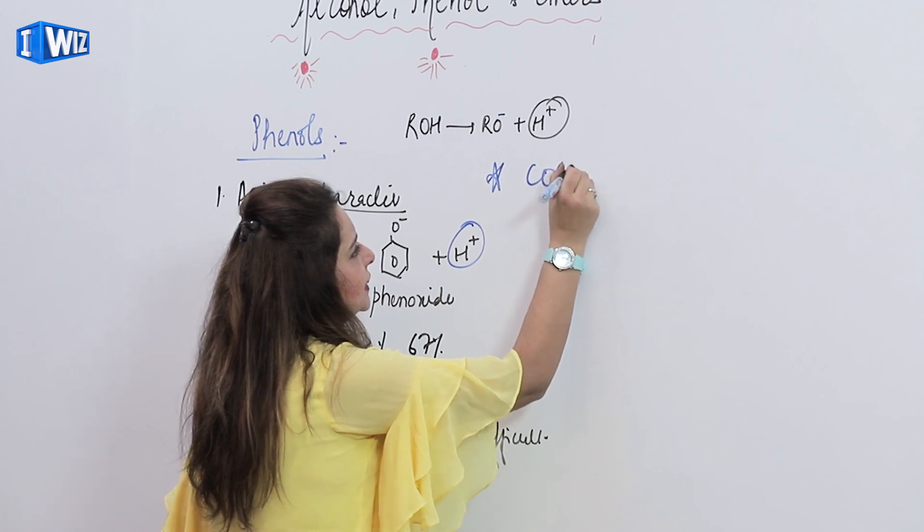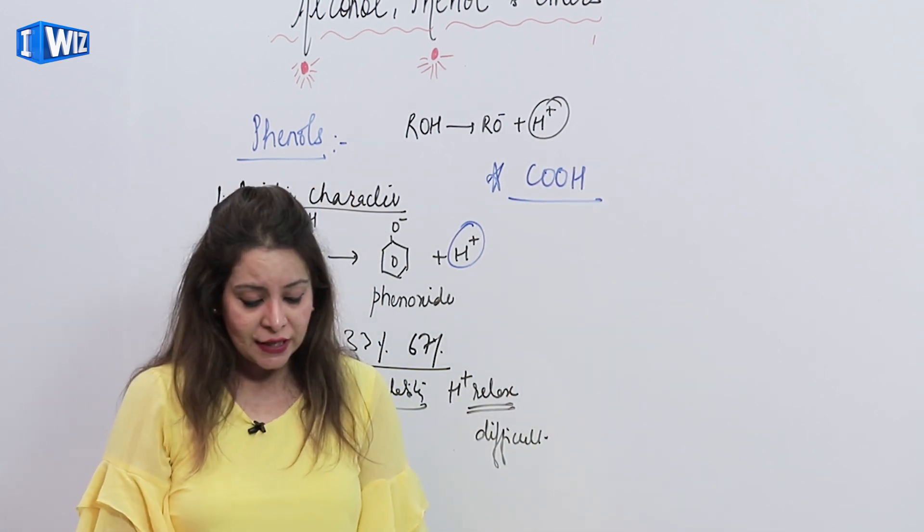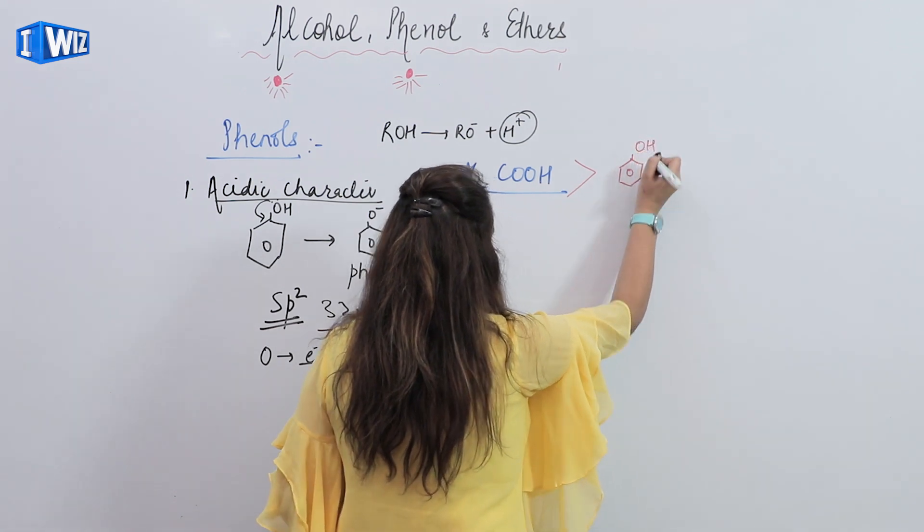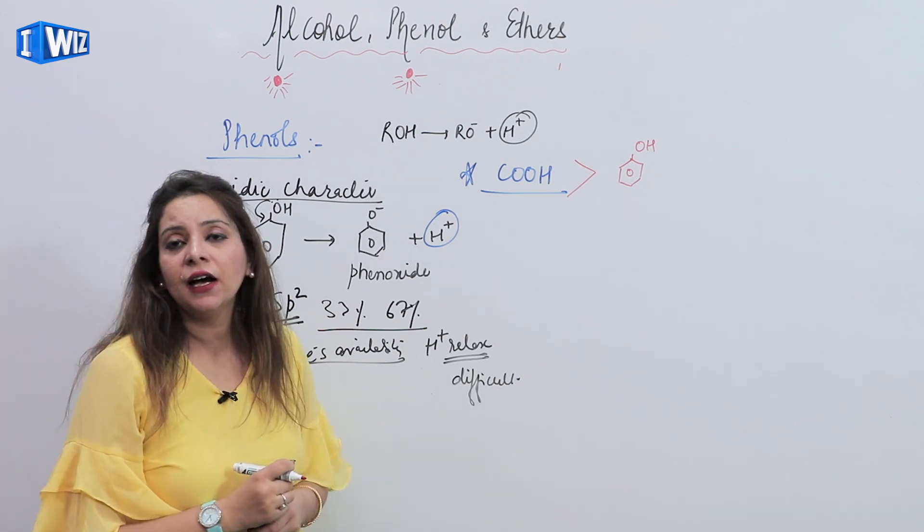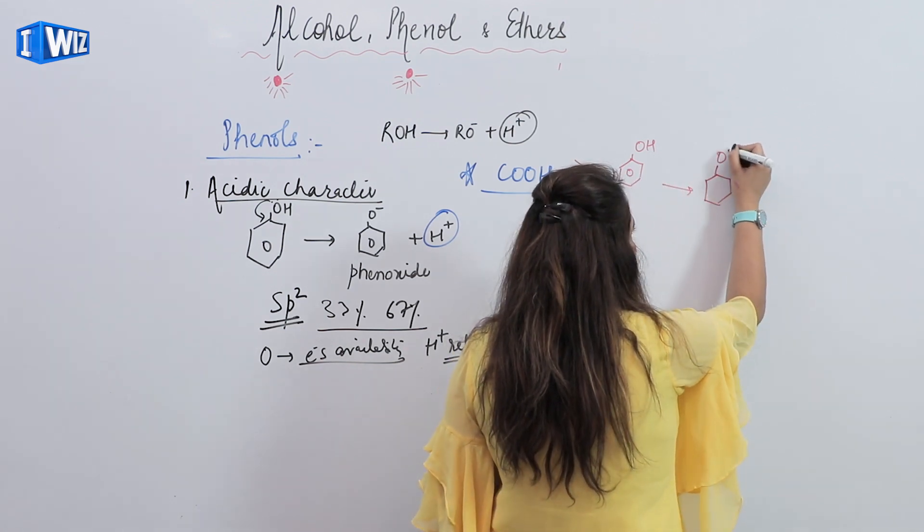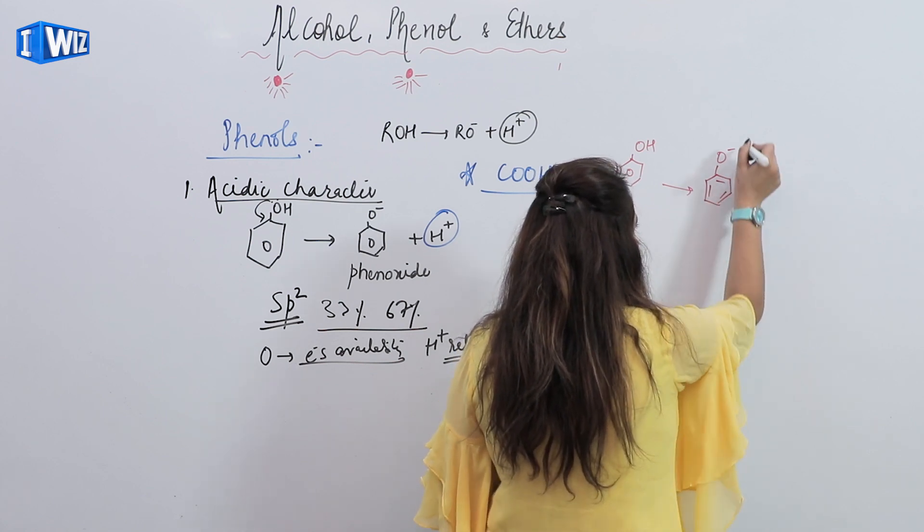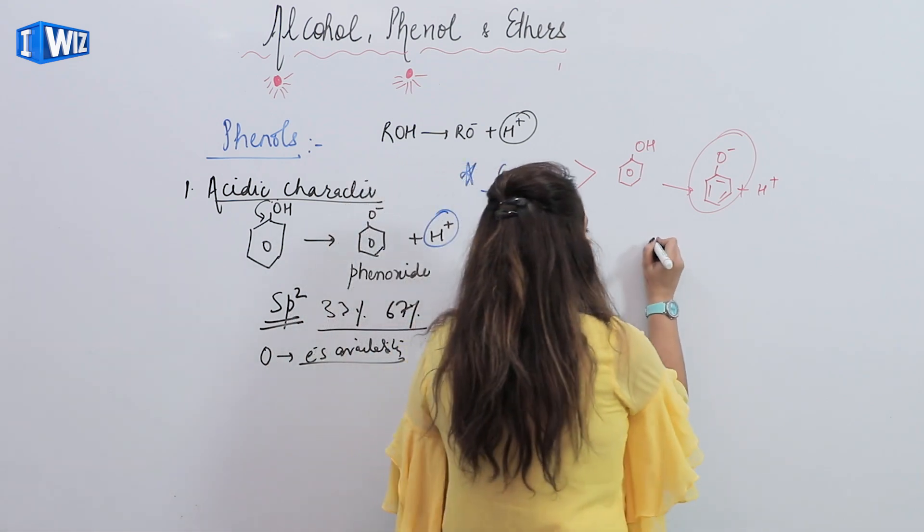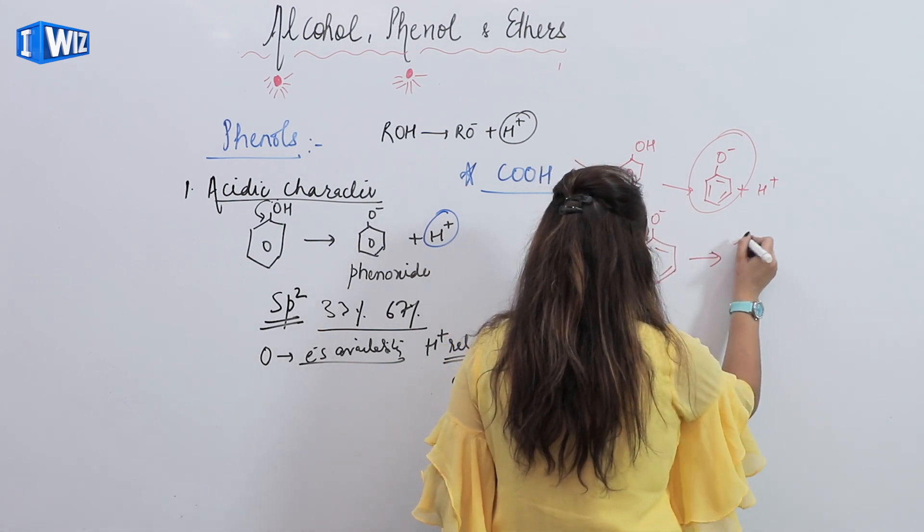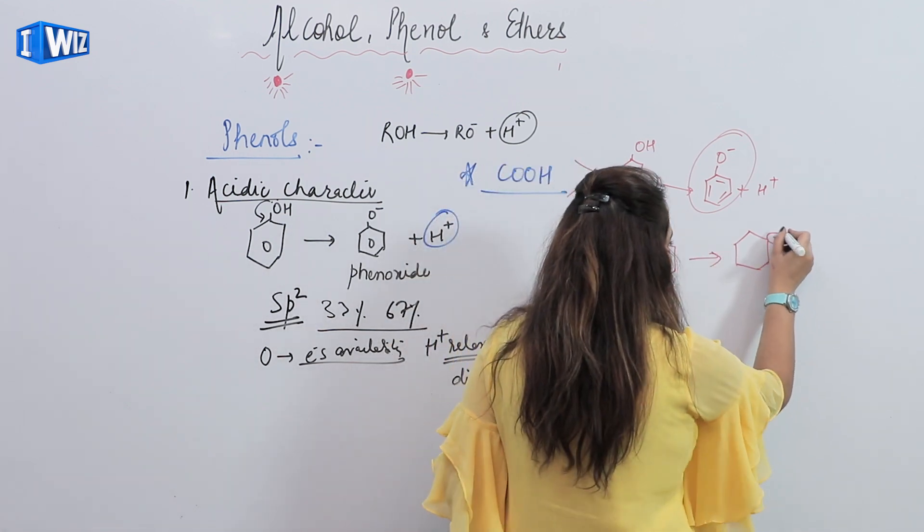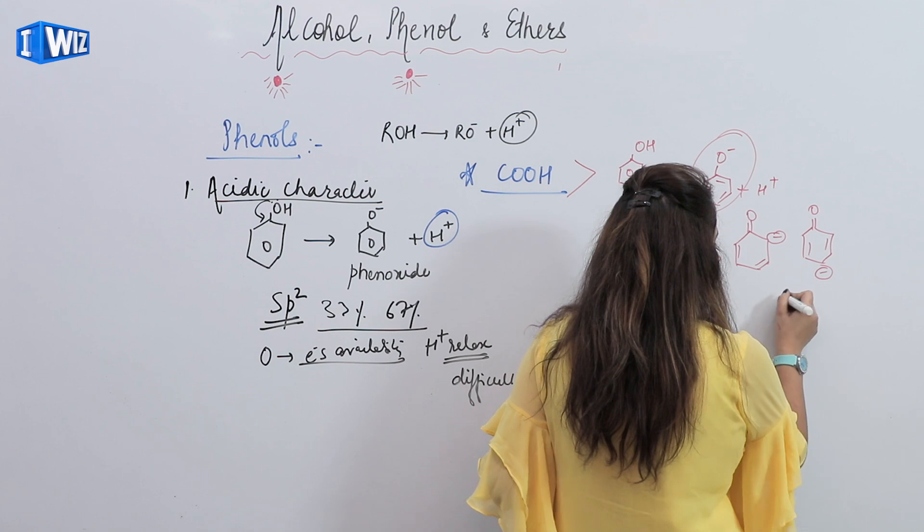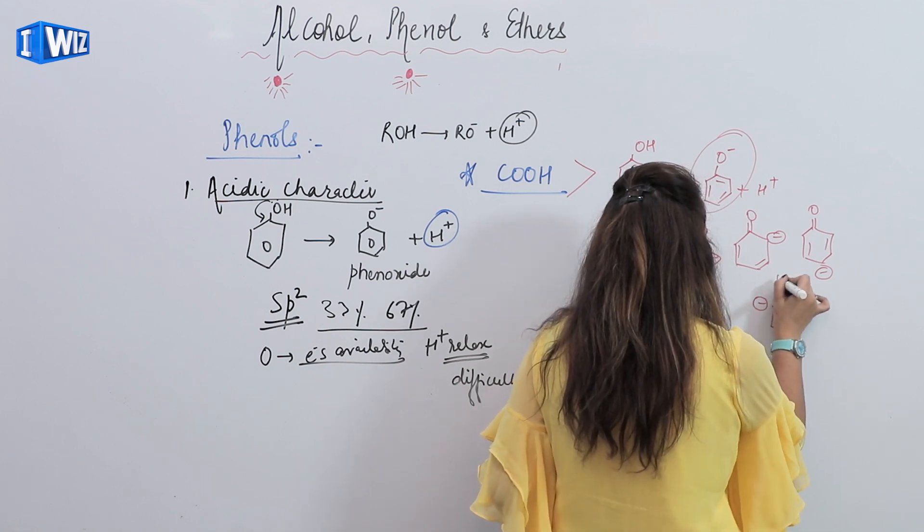But it's not that it's not acidic or doesn't show reactions where H positive ion is released. It does show such reactions, but the acidic character is not very strong. Now let's compare its acidic strength with carboxylic acid. If you compare with carboxylic acid, carboxylic acid's acidic strength is more as compared to phenol. See, what's the reason? If we make resonating structures of phenol and phenoxide ion, phenol releases phenoxide ion plus H positive.